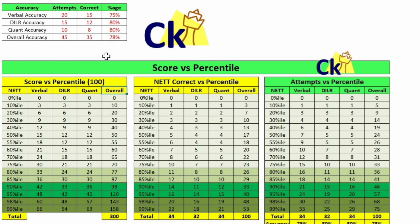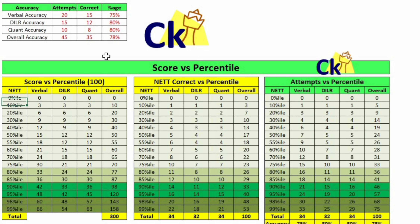The moment you do that, this column is going to be changed — the third column which is your attempt versus score. The first column here is a fixed column, you can't change it. This shows how much attempt based on last year's CAT score, how much was your attempt, and how much was your score versus percentile required. For example, if my target is 90 percentile, then 42 correct, 33 correct, and 36 correct questions is my 90 percentile section by section.